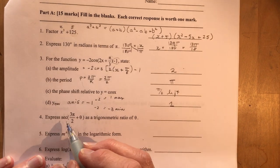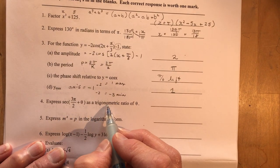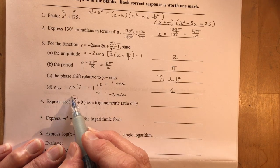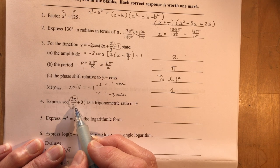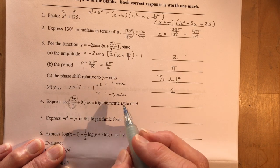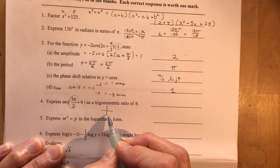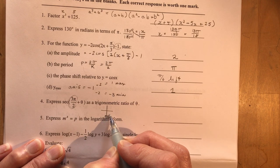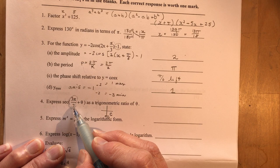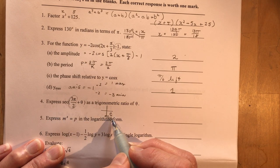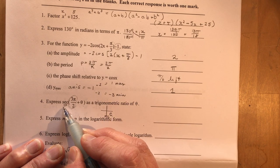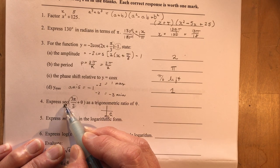Express secant 3 pi over 2 plus theta as a trigonometric ratio of theta. Okay, so when you see this 3 pi over 2, you'd be thinking co-functions. Right? The co-functions. Anything pi over 2, 3 pi over 2. So remember where you are at 3 pi over 2. That would be here. And I'm adding theta. So I'm going to be in the C quadrant. So secant in this quadrant is positive. That's the first thing you check. You check the sign of the function that you're starting with.